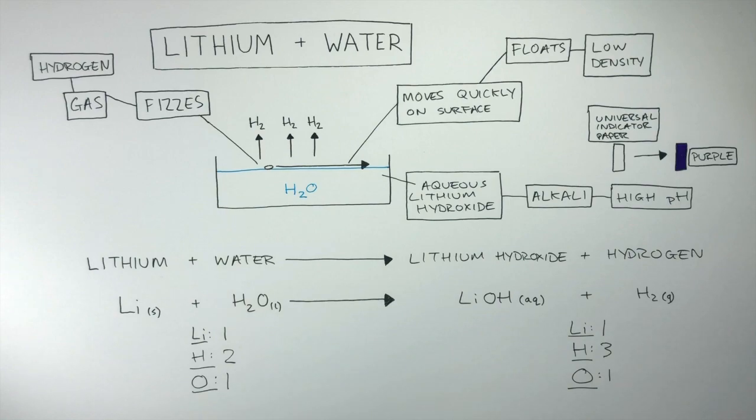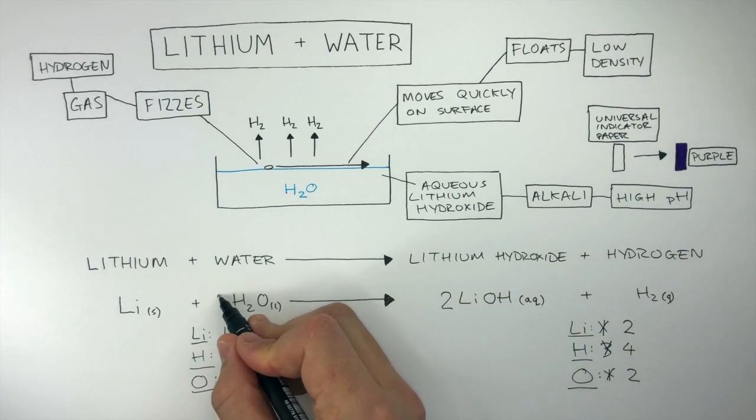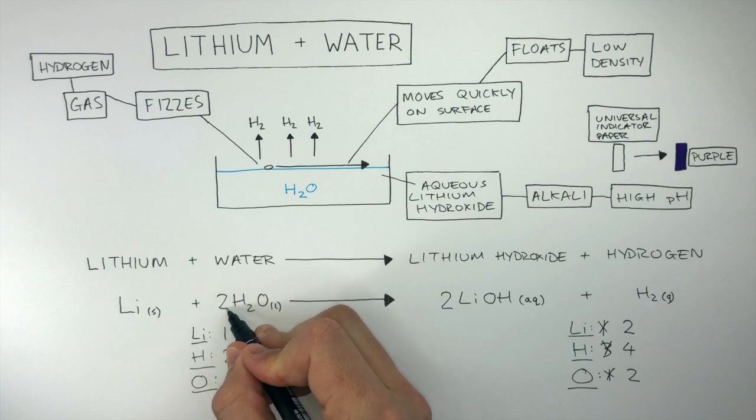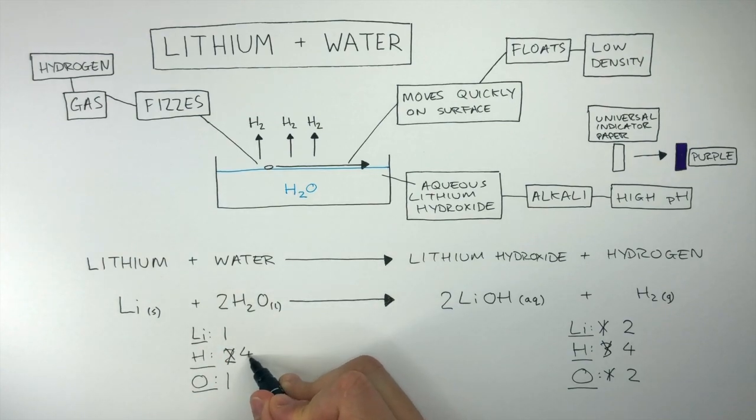To balance this, we put a big 2 in front of the LiOH. This means there are now two lithium atoms, four hydrogen atoms and two oxygen atoms on the product side. We now put a big 2 in front of the H₂O, so there are four hydrogen atoms on the left and two oxygen atoms on the left. The hydrogen and oxygen atoms are now balanced.